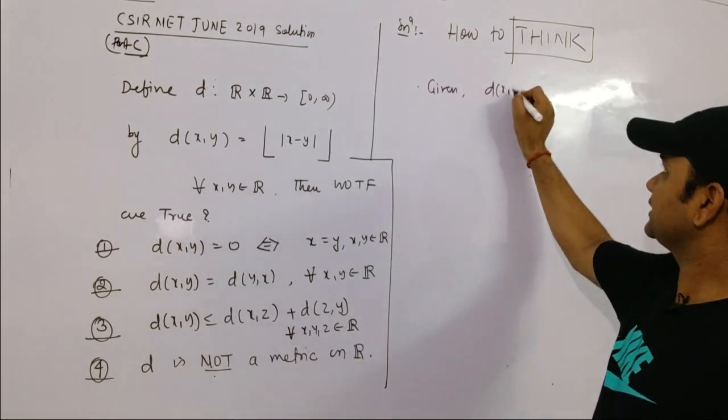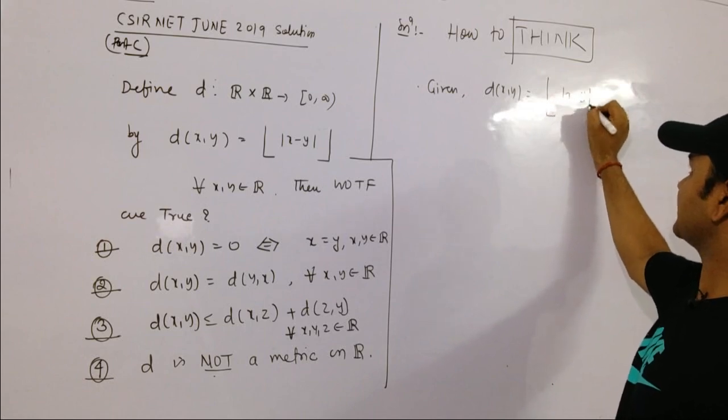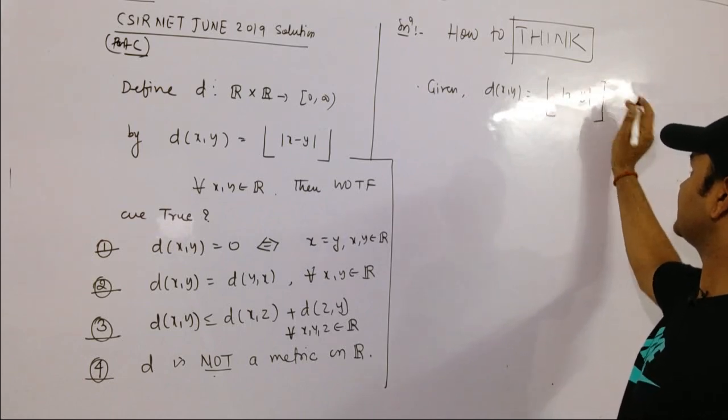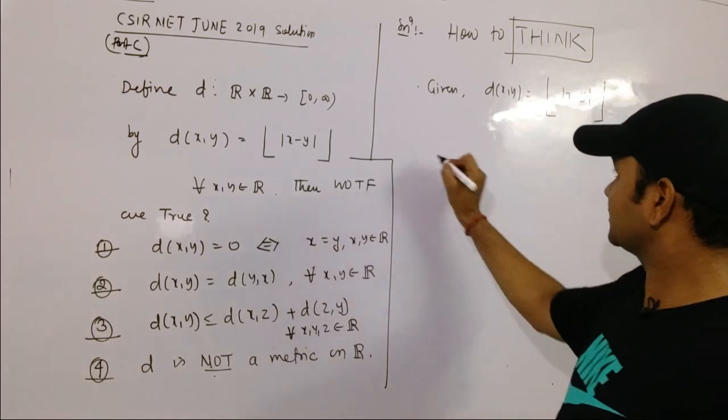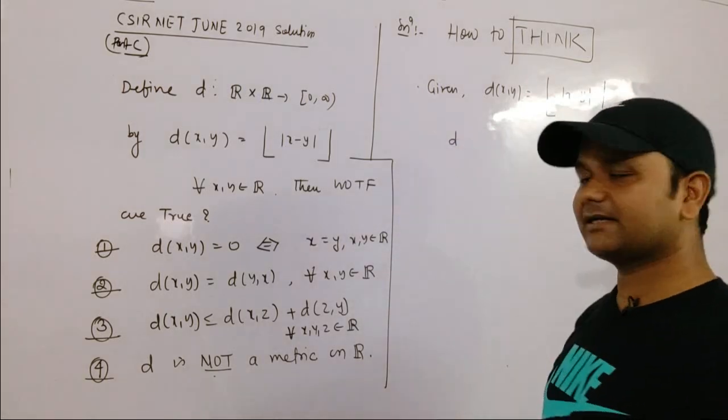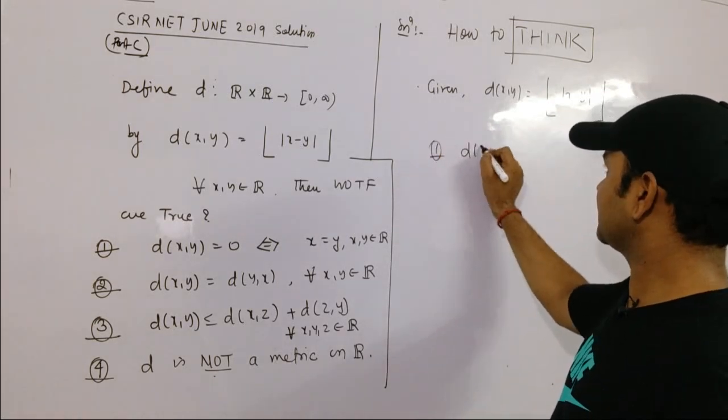You are asking whether this is a metric or not. For the metric, you are asking is d a metric or not? First option you are asking: if d(x,y) = 0, then will x and y be equal? Let me check. d(x,y) = 0 means [|x-y|] = 0. For any greatest integer function, it is 0 when the inside quantity is between 0 and 1.